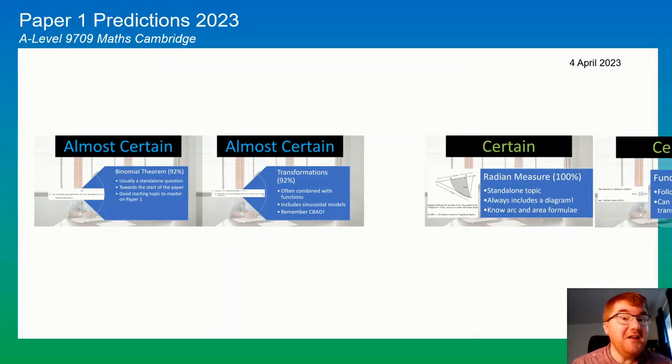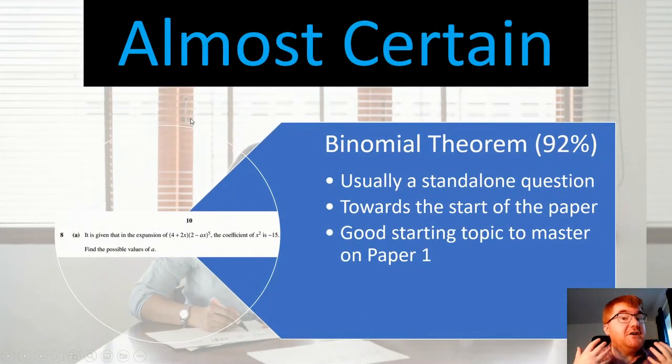Hello and welcome to another Ginger Math Petition video where I'm going to go through my predictions for A Level 9709 Maths for Cambridge to get you up to speed with everything paper 1. So let's get started. It's quite a clear prediction here, so most of the topics that appear you are going to expect.